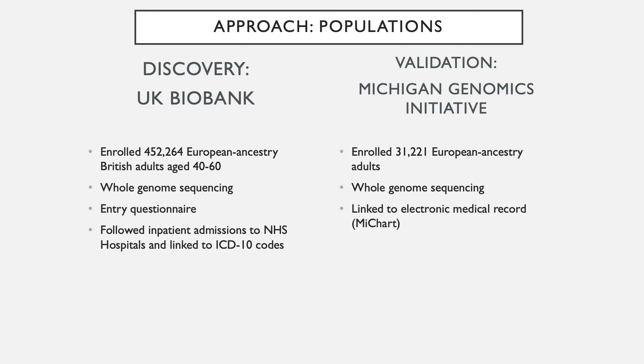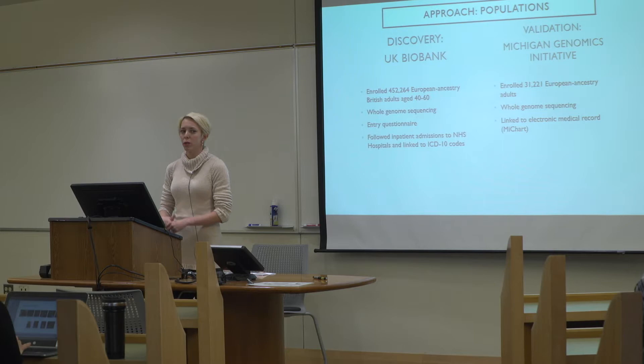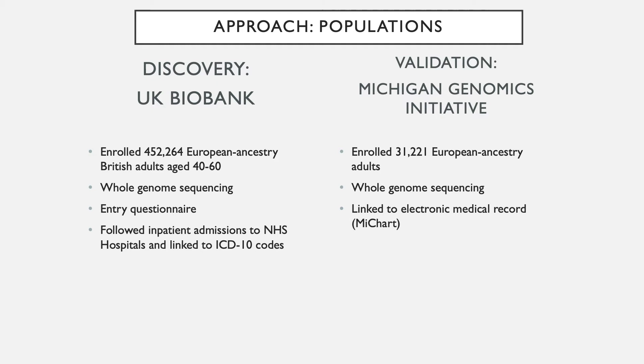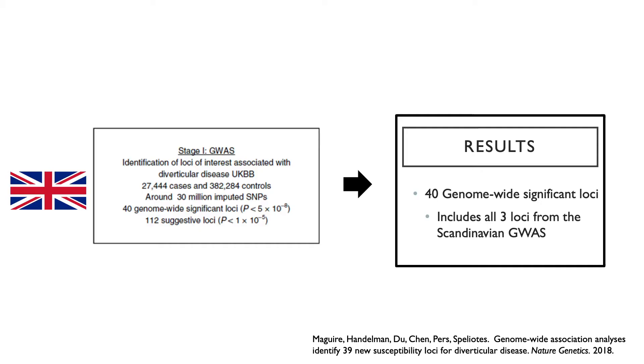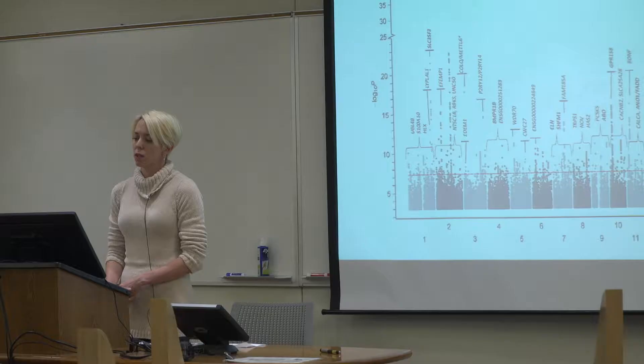I'm going to talk about how we used MGI in the service of this disease. The first was using it as a replication cohort in a GWAS for diverticulitis. Our discovery cohort is the United Kingdom Biobank, which has nearly 29,000 patients with diverticular disease as an admitting diagnosis. Due to the Western European background and age range of 40 to 60 of UK Biobank participants, essentially all can be thought of as controls given the ubiquity of the precursor lesion. We performed a standard GWAS using the UK Biobank and used MGI as our replication cohort. We identified 40 genome-wide significant loci, including three previously seen in a smaller Scandinavian GWAS.